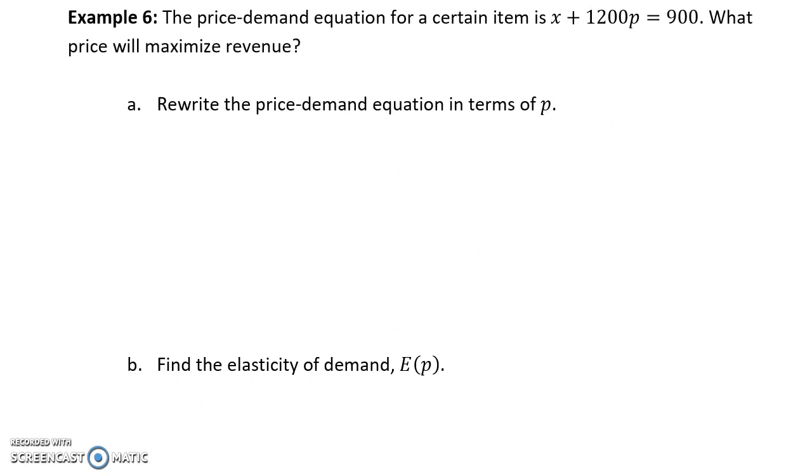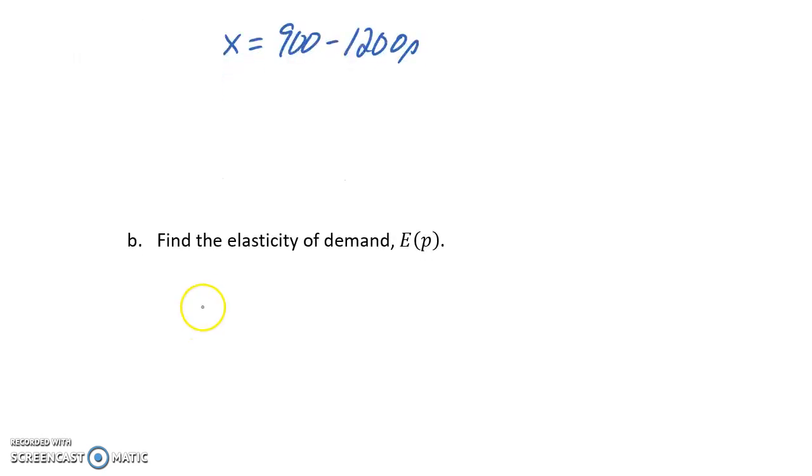In our last example, we're given another price-demand function which isn't solved for x. We first solve for x, which gives us 900 - 1200p. Turning to Wolfram Alpha to calculate our elasticity of demand function, we get 1200p over 900 - 1200p.